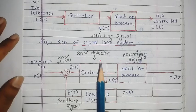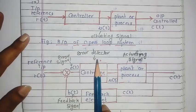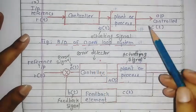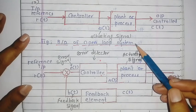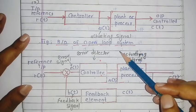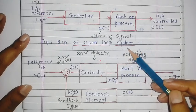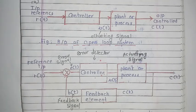The twelfth comparison point is already covered — that is the difference between the block diagram of the open loop system and the closed loop system. The next topic will be covered in the next lecture.